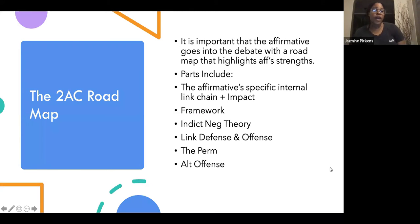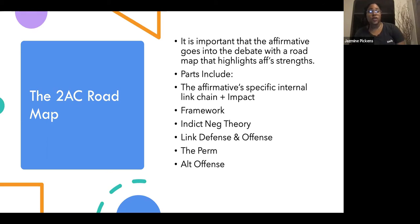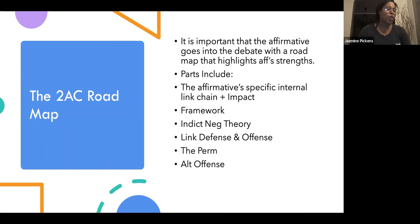I provided a roadmap for the negative, so I'll provide a roadmap for the 2A's. It is important that the affirmative goes into the debate with a roadmap that highlights the affirmative strengths. The parts include the affirmative specific internal link chain plus the impact framework, indicting the negative theory, link defense and offense, the permutation, alt-offense, and alt-defense.